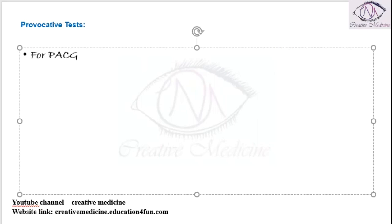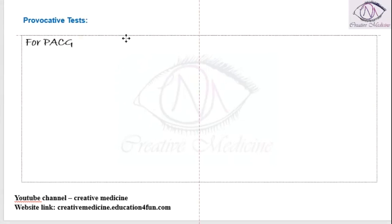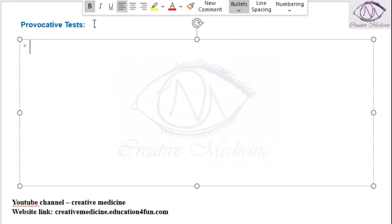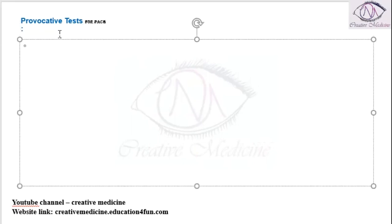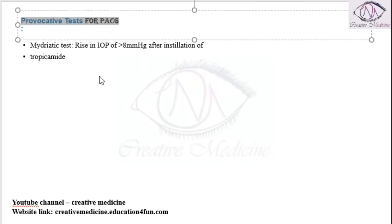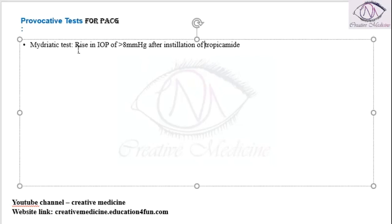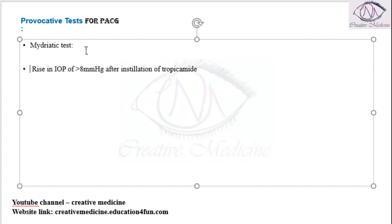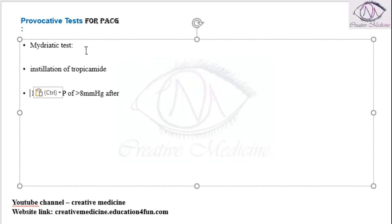Provocative tests for primary angle closure glaucoma include three types. For example, first we have the mydriatic test. In the mydriatic test, you will give the patient tropicamide. Once you instill tropicamide, you will see whether there is a raise in intraocular pressure or not.